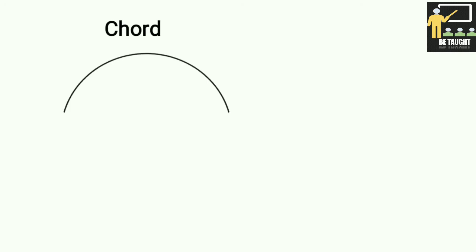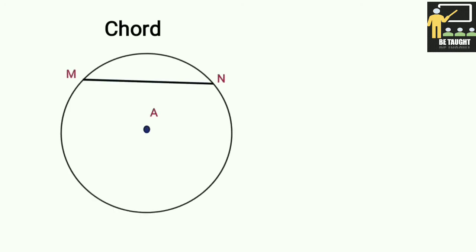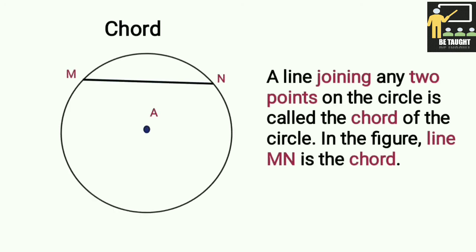Chord: A line joining any two points on the circle is called the chord of the circle. In the figure, line MN is the chord. A chord does not pass through the center of the circle, but it joins two points on the circle.